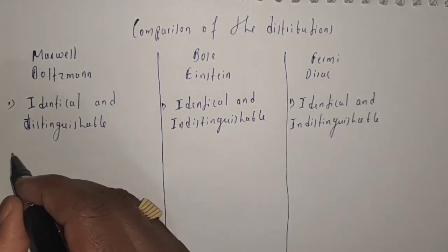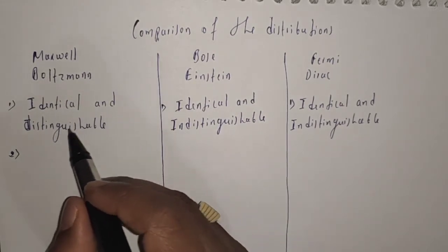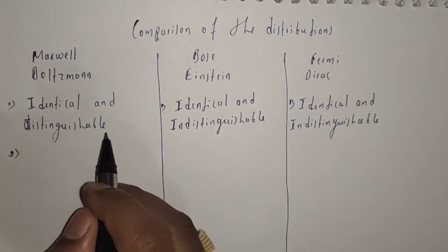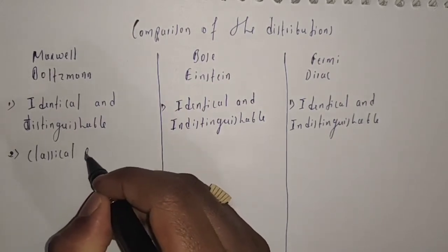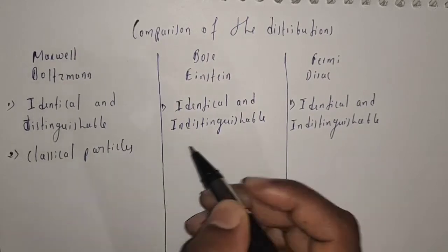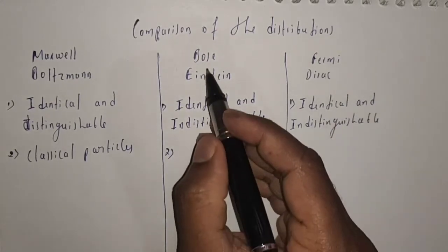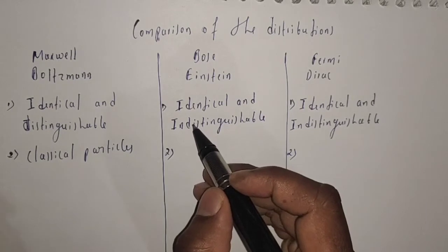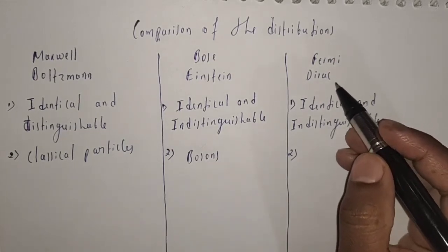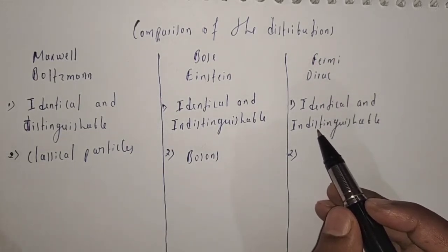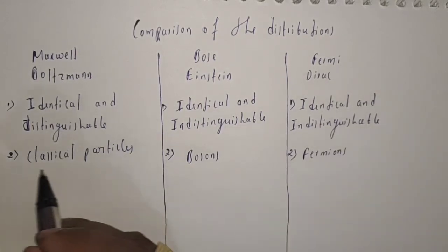Now let us see the second comparison. In Maxwell-Boltzmann Statistics we call the distinguishable particles as classical particles. In Bose-Einstein Statistics we call particles as bosons, and in Fermi-Dirac Statistics we call the indistinguishable particles as fermions. This is the second comparison.